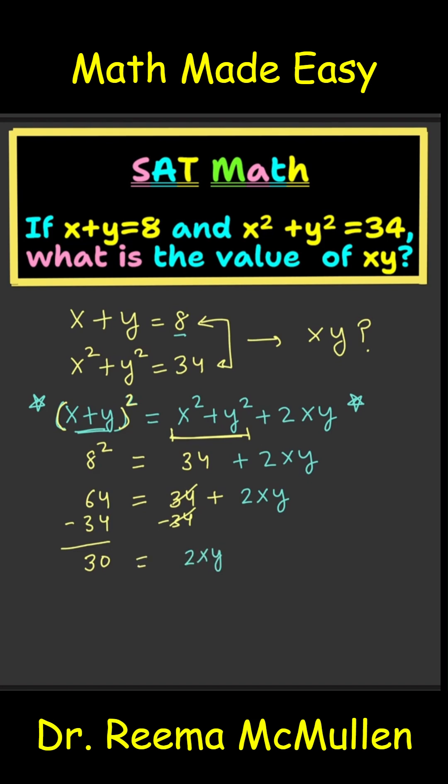Now, we are asked to solve for xy. What are we going to do? We are going to divide both sides of this equation by 2. 30 divided by 2 equals 15. And 2xy divided by 2 equals xy. So here we got xy equal to 15.